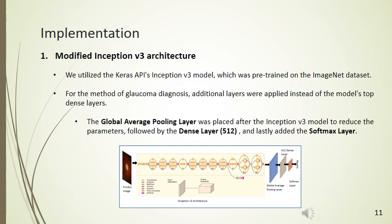For the implementation we performed three deep learning architectures. The first architecture is Inception V3, where we utilized the Keras API Inception V3 model pre-trained on the ImageNet dataset. As a modification, a global average pooling layer was placed after the Inception V3 model to reduce parameters, followed by a dense layer, and lastly a softmax layer.